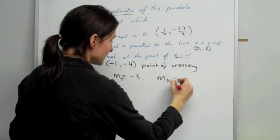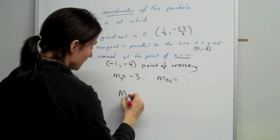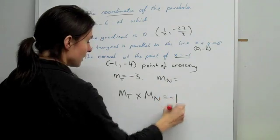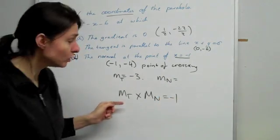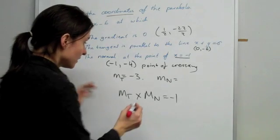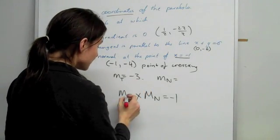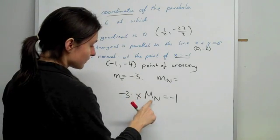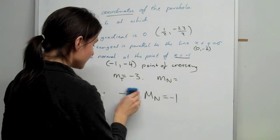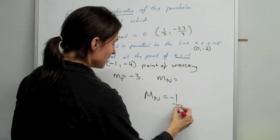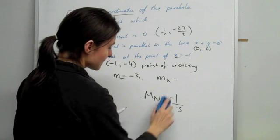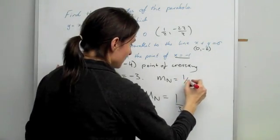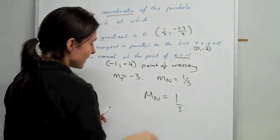The gradient of the normal is found by using this particular formula here where the gradient of your tangent multiplied by the gradient of your normal equals -1. That's just a rule and it works when they're 90 degrees apart. So we just plug -3 into here, and now we'll just have to rearrange. We're going to bring this -3 and divide it on the other side, and basically the plus and the minus is cancelled and you will get 1/3. So that's the gradient of your normal.